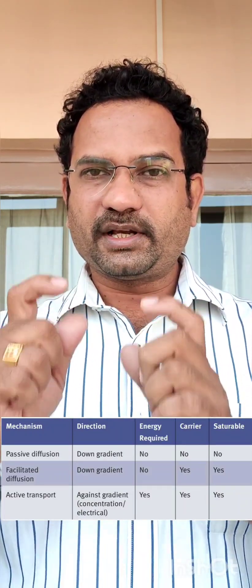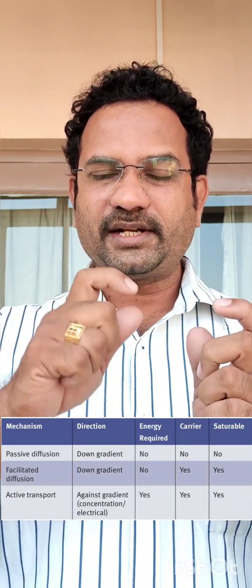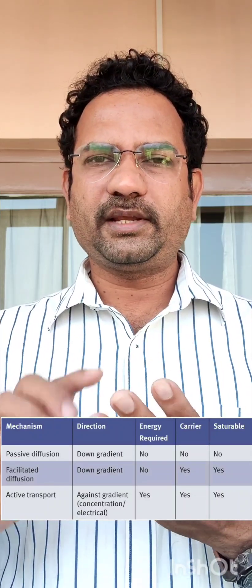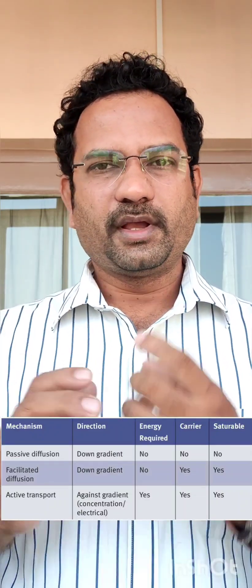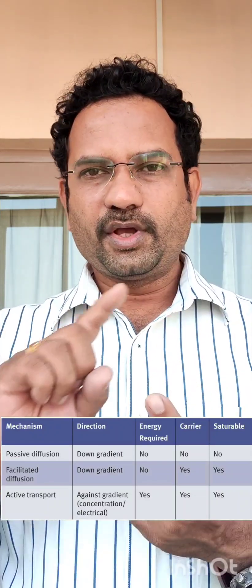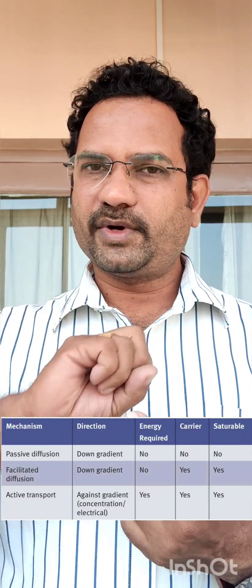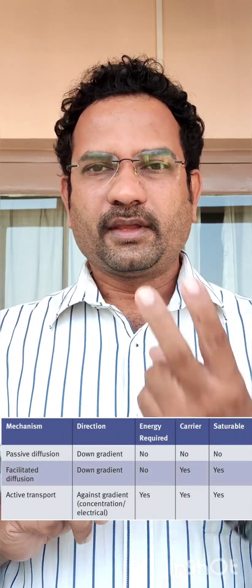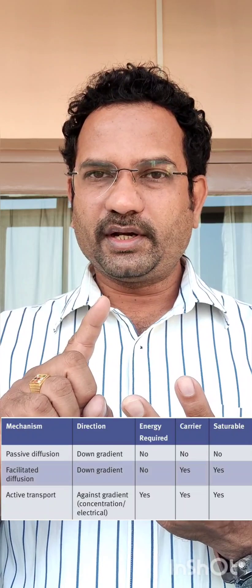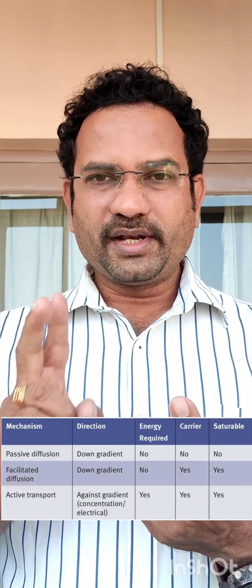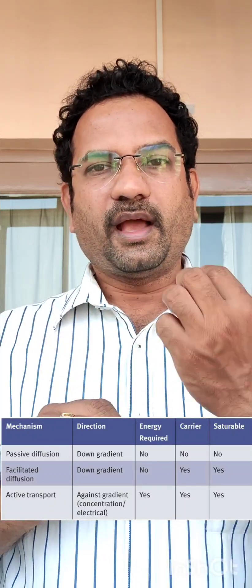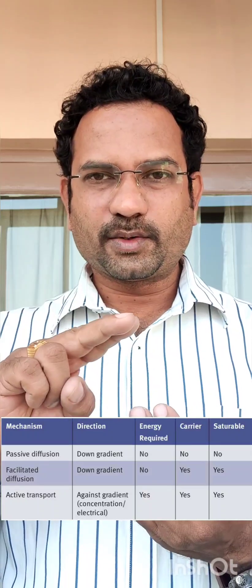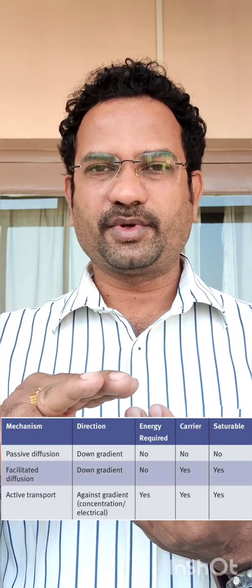Saturability applies to both facilitated and active absorption. To summarize all three major pathways: Passive — no carrier required, no energy required, not saturable. Facilitated — carrier required, no energy required, saturable. Active — carrier required, energy required, saturable.